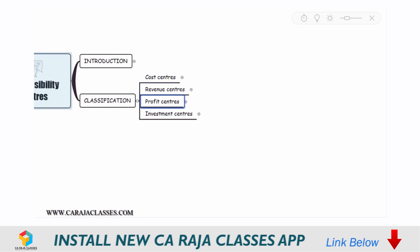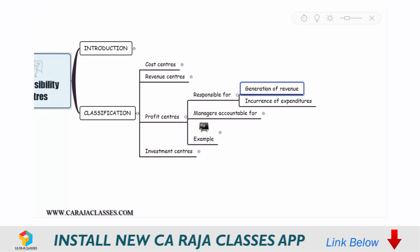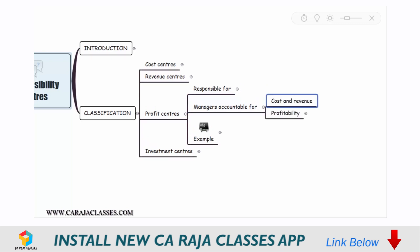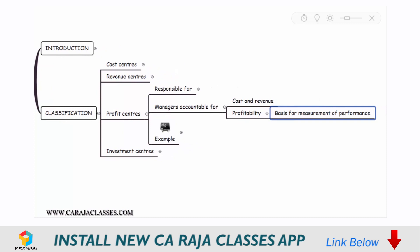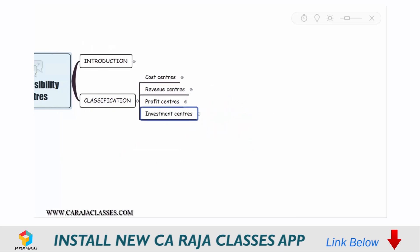Then comes profit centers. Profit centers are those centers which are responsible for generating revenue and are also responsible for the expenditures they incur. The managers of profit centers will be accountable for both cost and revenue, and profitability will be used as a tool for measuring their performance. Examples can be decentralized branches of an organization — for instance, a branch of a bank is basically a profit center.